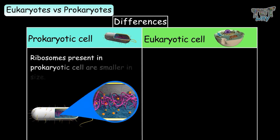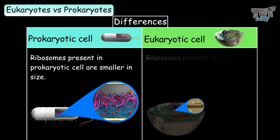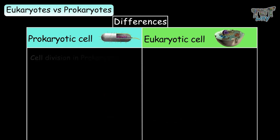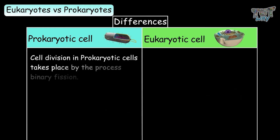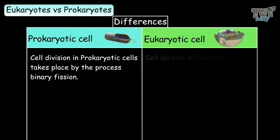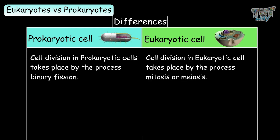Ribosomes present in prokaryotic cells are smaller in size, whereas ribosomes present in eukaryotic cells are bigger in size. Cell division in prokaryotic cells takes place by the process of binary fission, whereas cell division in eukaryotic cells takes place by the process of mitosis or meiosis.